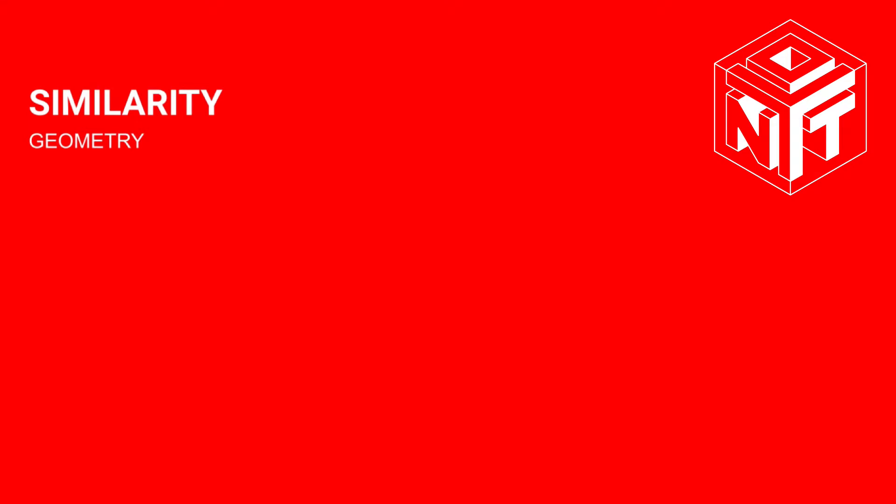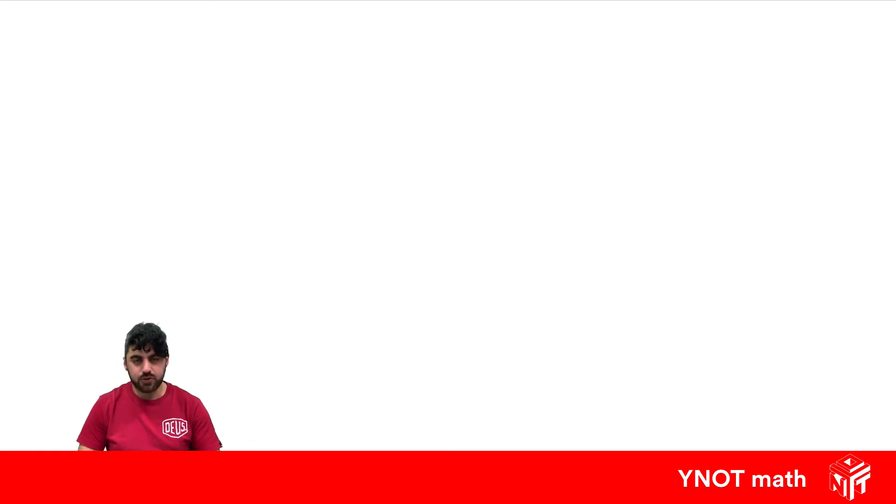Similarity. So if two shapes are similar, what that means is that all the angles inside the shape are equal to the matching angles in the other shape and all the sides are in proportion to each other.